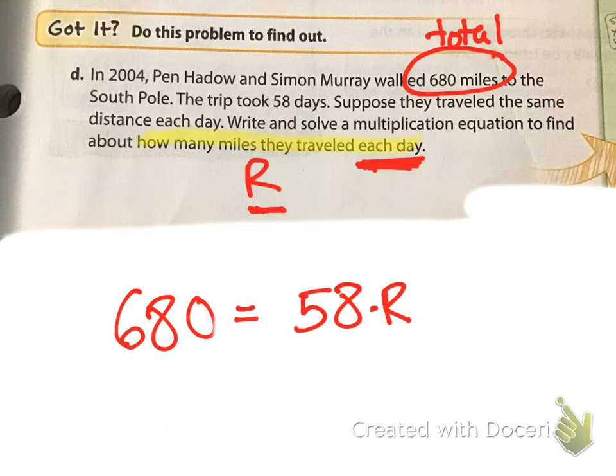So, now is when we would show our work. What's our next step? Now that we've written our expression, let's solve that here. What is the next step that we do, Malia? She said multiply 58 by R. Perfect. But can I do that? Do I know what R is? No. I have to isolate the variable. So, how, Malia, do I isolate the variable? Yeah, so we're going to divide each side by 58.